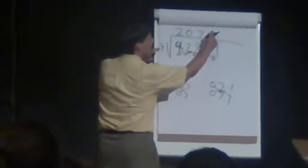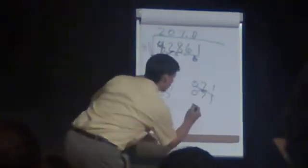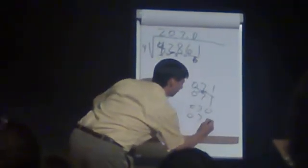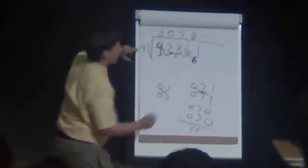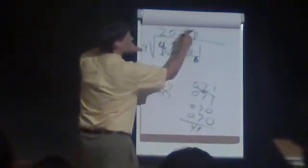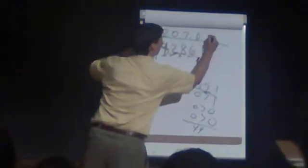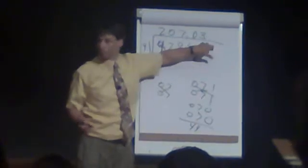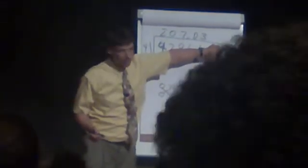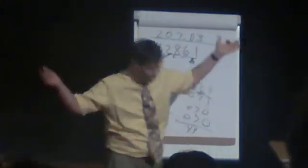Four goes into six once with a remainder of two. But it's better to say it goes into it zero times with a remainder of six. And now, with zero, seven, zero, I know this is going on too long. My number here is 49. And I do 61 minus 49 is 12. Four goes into that three times. And so, the square root is approximately 207.03. If someone has a calculator, does that actually work? Okay. Thank you very much.